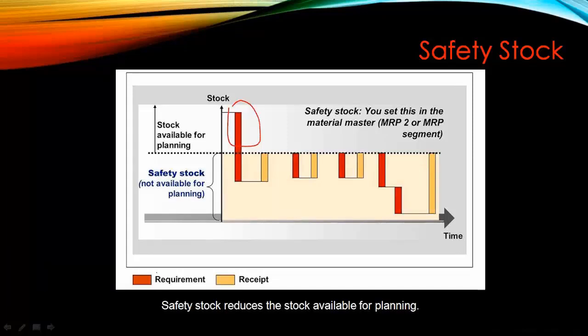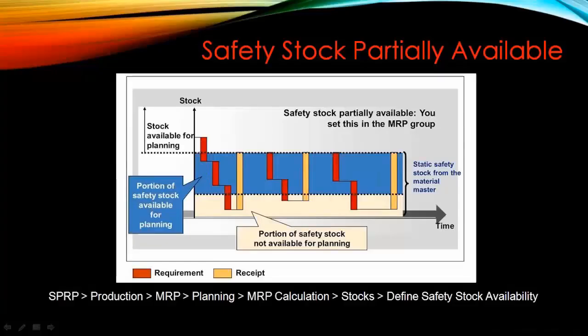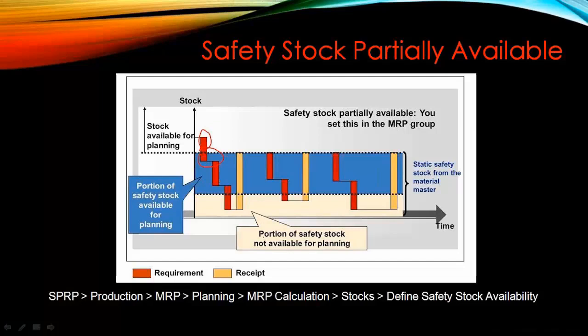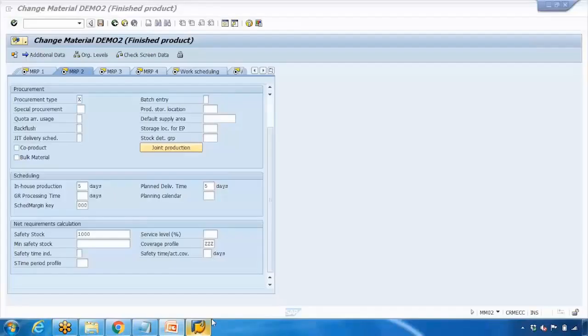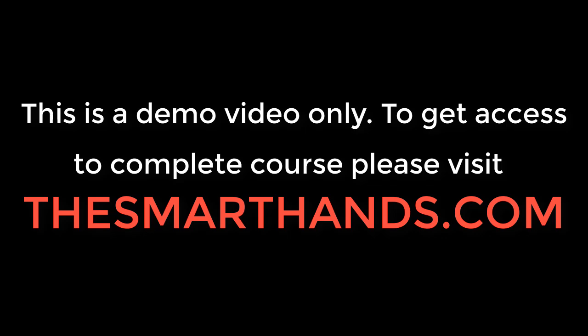On the slide, the green color represents requirements and yellow represents receipts — for every requirement there is a new receipt or planned order, and the standard safety stock is never consumed. However with partially available safety stock, whatever percentage you have defined can be consumed. The customizing menu path is shown at the bottom of the screen — you can search for 'Define Safety Stock Availability' in SPRO to configure this setting.